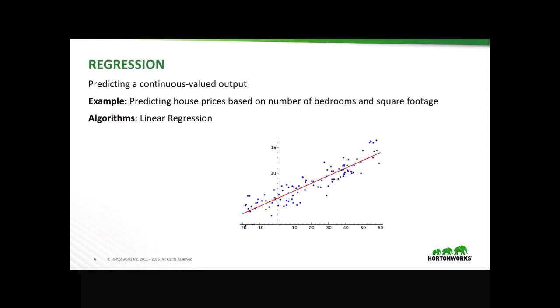Regression is great for predicting a continuous valued output. For example, you want to predict house prices based on number of bedrooms and square footage in a given zip code. Linear regression is one of the simpler algorithms that essentially does a curve fitting to a given set of points.